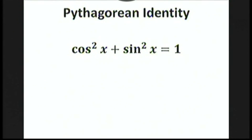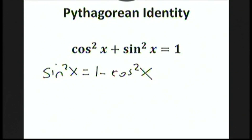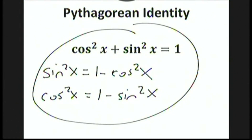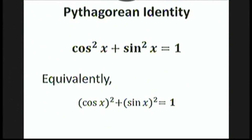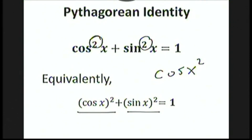Next, we have the important Pythagorean identity: cosine squared x plus sine squared x equals 1. By subtracting cosine squared x from each side, we also have that sine squared x equals 1 minus cosine squared x. Similarly, cosine squared x equals 1 minus sine squared x. All three are useful, but the first especially should be memorized — the other two follow easily by simple subtraction. Note that cosine squared x means take the cosine of x and then square it, which is different from cosine of x squared, which says square x first, then take the cosine.